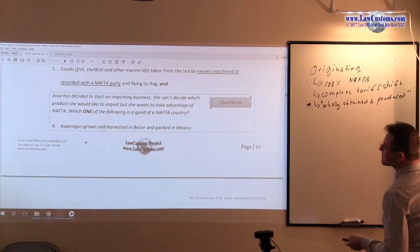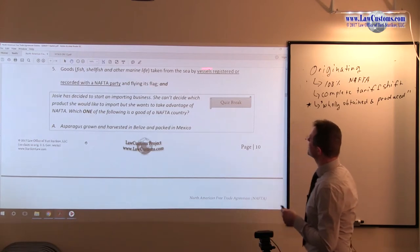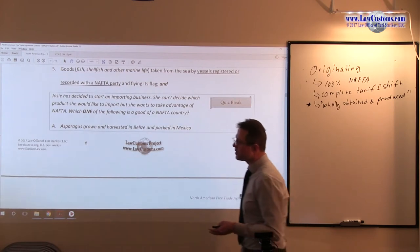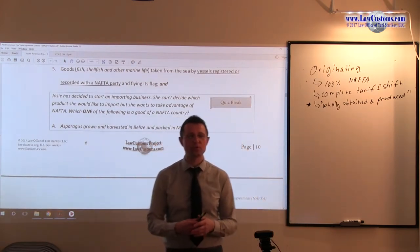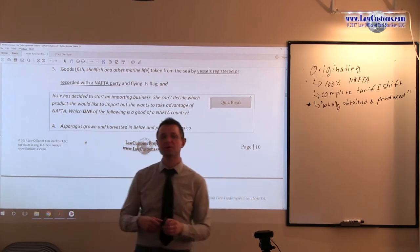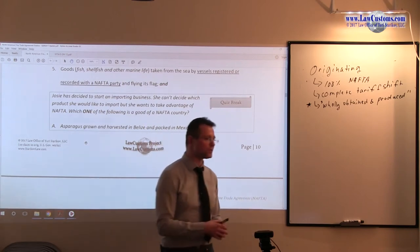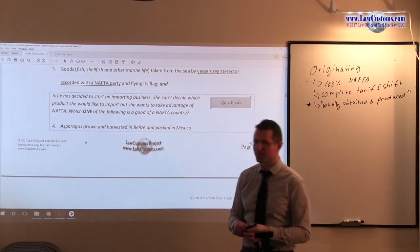Number 5 says goods, fish, shellfish, and other marine life taken from the sea by vessels registered and recorded with a NAFTA party and flying its flag. So it goes to the general concept of country of origin, which we opened up our chapter on country of origin, where we talked about that Norwegian vessel flag.